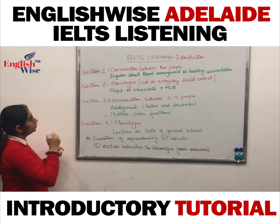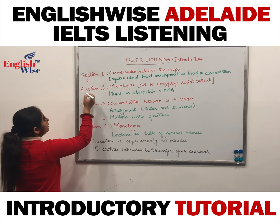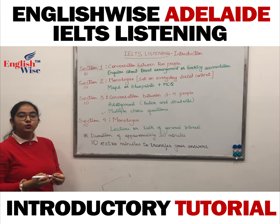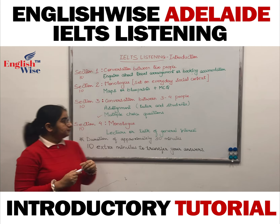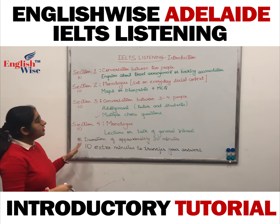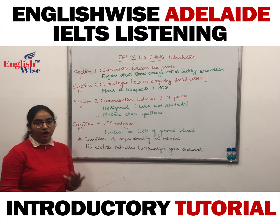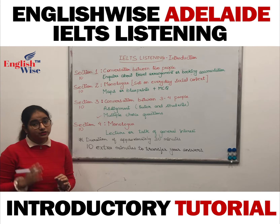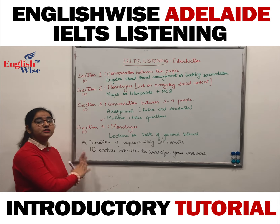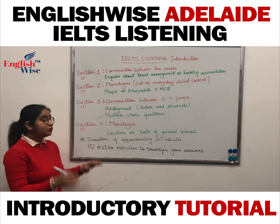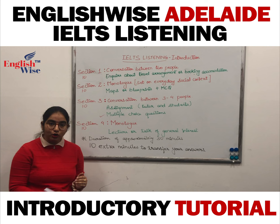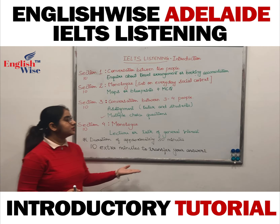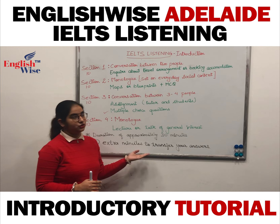These sections each have 10 questions — all together you are marked out of 40. Depending on what your desired score is, you have to make sure to perform well in listening, as it is very easy to get good scores. Listening is the easiest section according to me, so you should practice a lot of tests in order to score more and achieve your desired score in the listening section.